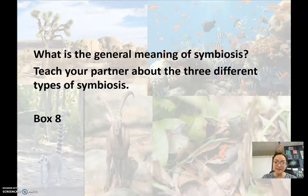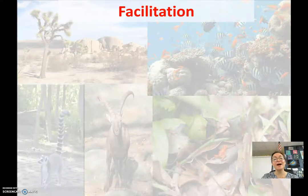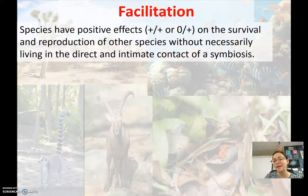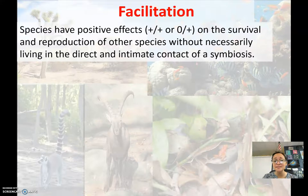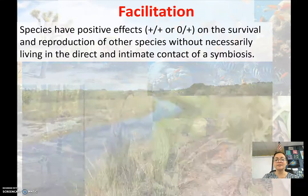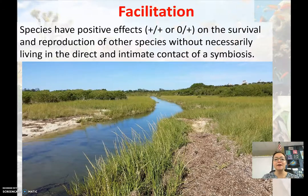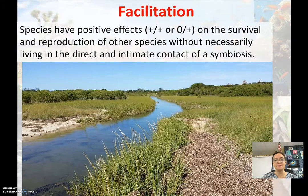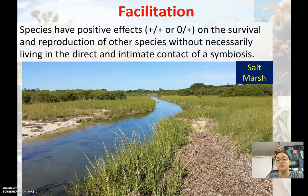Now we're going to make a new set of boxes with only five for the new set. Facilitation — when you think of the word facilitate, that means to help. Facilitation is different than mutualism or commensalism because the species that has positive effects on others nearby is not necessarily in a close interaction. Here you have what's called a salt marsh with a certain species of plants.